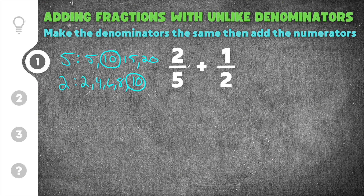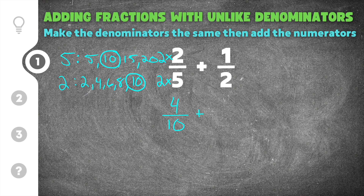We'll use multiplication to turn these fractions into equivalent fractions with 10 in the denominator. To change the 5 into a 10, we multiply the fraction by 2, since 5 times 2 is 10. That gives us 4 over 10. For one half, we multiply by 5 since 2 times 5 is 10, giving us a new fraction of 5 over 10.